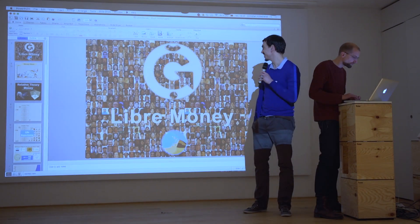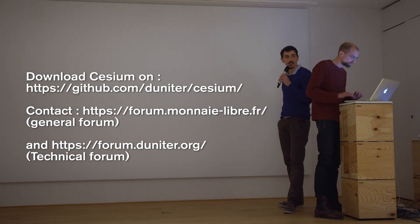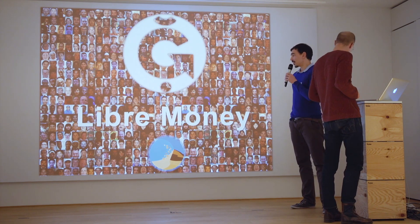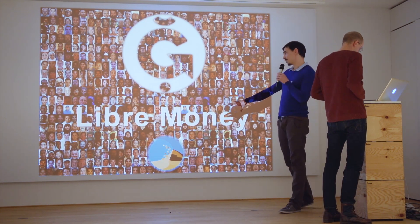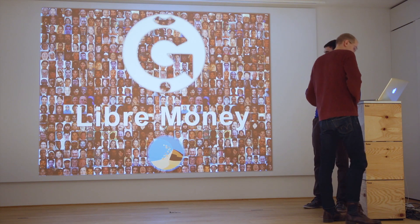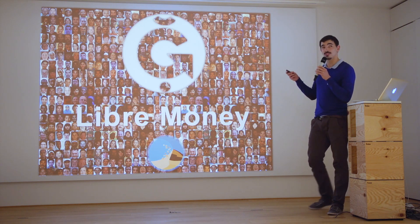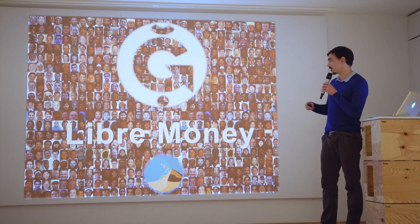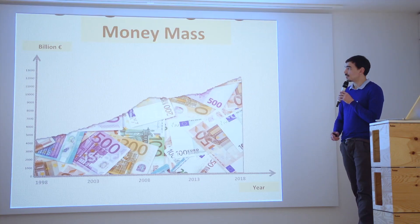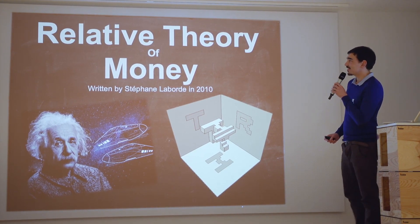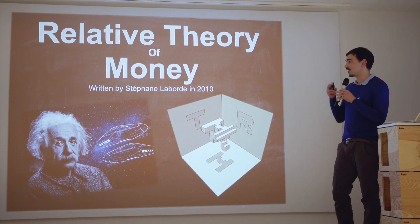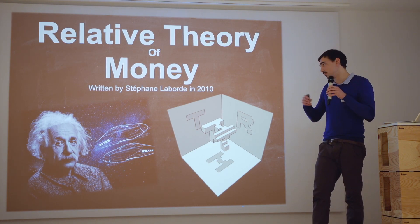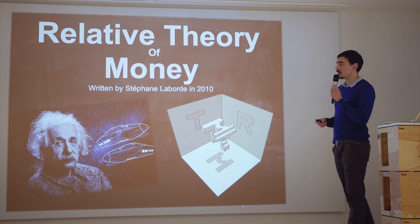Hi everyone, my name is Martin and I'm going to present the Duniter project, the labor of money, and what we call Libre Money — we don't like to use the term 'free money', so we use 'liberal money' — which is something that has a strong mathematical background. I'll cut this presentation in half: talking about the theory and then talking about the concrete project going on in France right now around this idea.